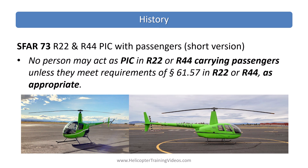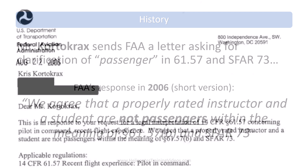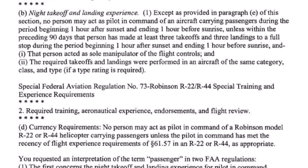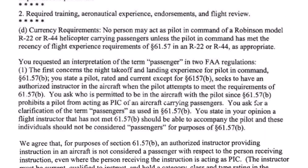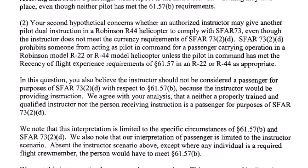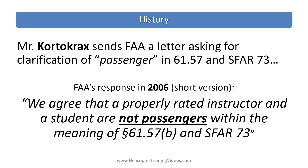So if you're flying an R-44 with passengers you have to be R-44 passenger current, and same for R-22. Mr. Carter Cracks sends a letter to the FAA asking for clarification of the phrase 'passenger' in 61.57 and SFR 73. In 2006 they write a letter of interpretation, and the short version is: we agree that a properly rated instructor and a student are not passengers within the meaning of 61.57 and SFR 73.